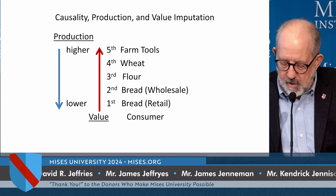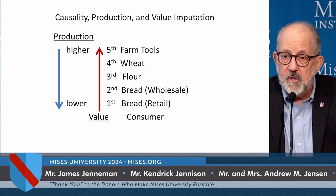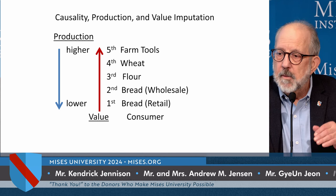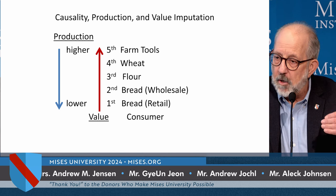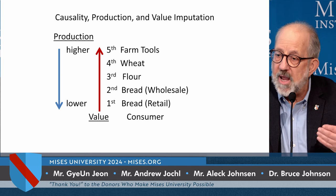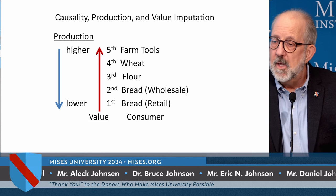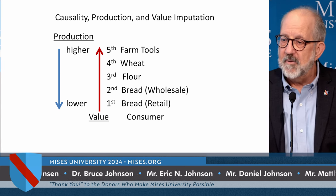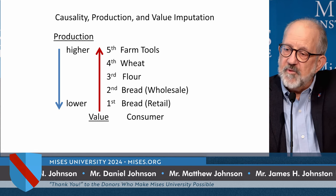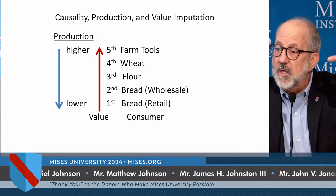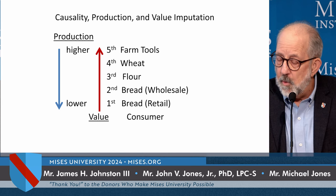Production goes from top to bottom — from higher-order goods to lower-order goods. But value goes from the lower-order goods, from the consumer experience, backwards toward the higher-order goods. Bread has value because consumers value the services of consuming bread. Flour only has value because bread has value. Wheat only has value because flour has value. So the cost of production theory is completely wrong, Menger pointed out. A diamond or automobile is not valuable because it costs a lot to produce. It's the other way around: because something has high value, people will spend a lot of resources and time trying to produce it. That is the law of imputation.